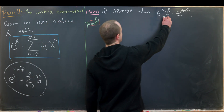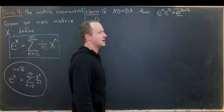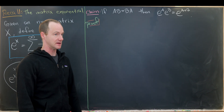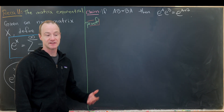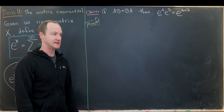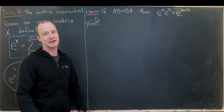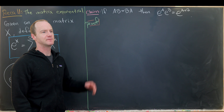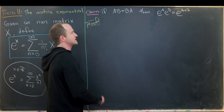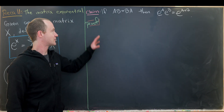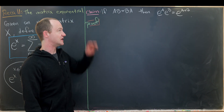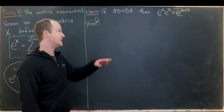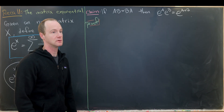Of course, this equality is true for all numbers A and B. But as we'll see, that relies on the fact that multiplication of numbers is commutative. So let's do this calculation, and after we've achieved this result, we'll look at an example where this equality does not hold.